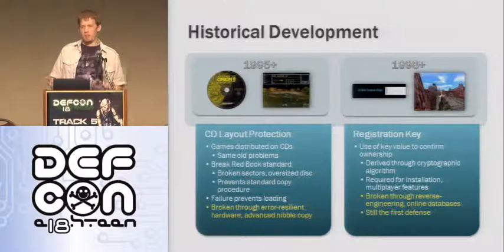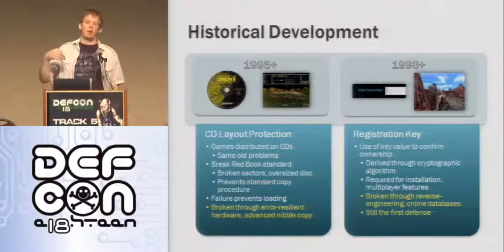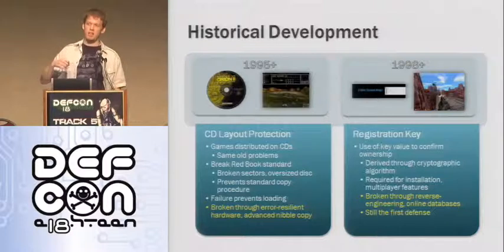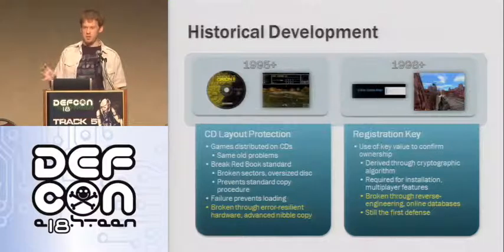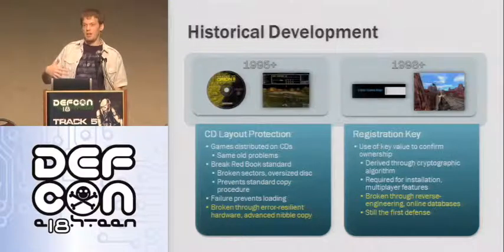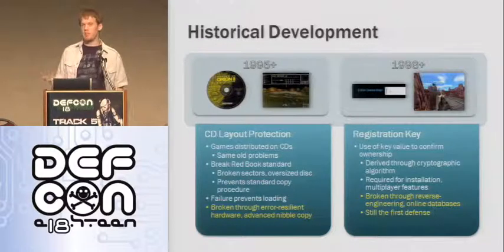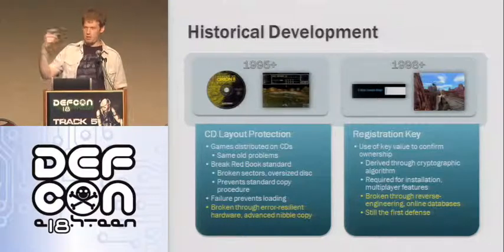A couple of years later, after everything failed with CD protection and people were just duplicating their CDs, the next thing that came along — which had previously been applied to Office software — is the registration key. A registration key is a secret that certifies you have actually purchased the software legitimately. Underneath the hood, there's typically some cryptographic function with parameters the publishers can tweak that generates a sequence of valid registration keys. There are two problems with this: the keys can be reverse engineered, and you can either brute-force generate valid keys or just remove the bit of code that checks for it.